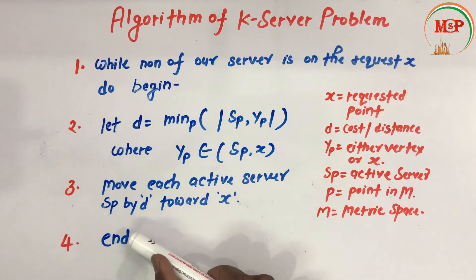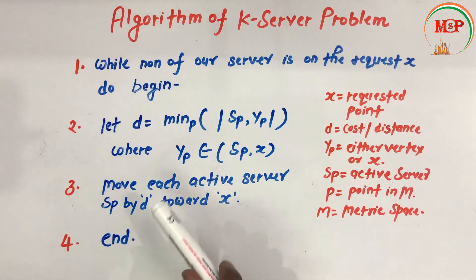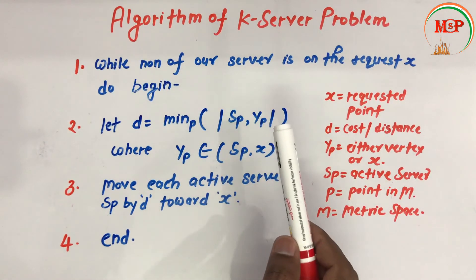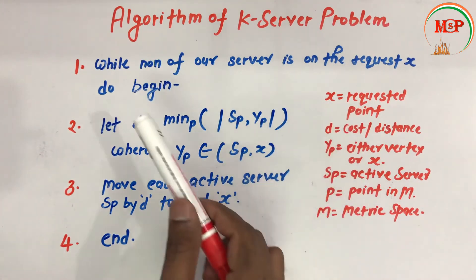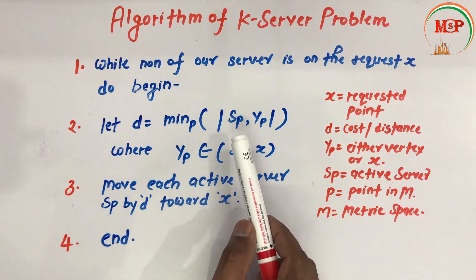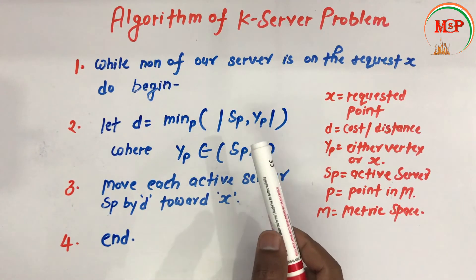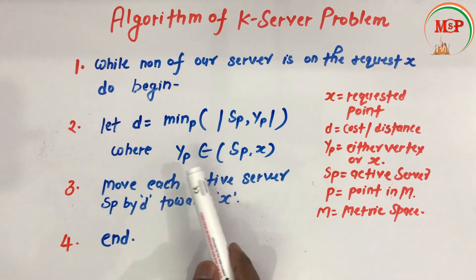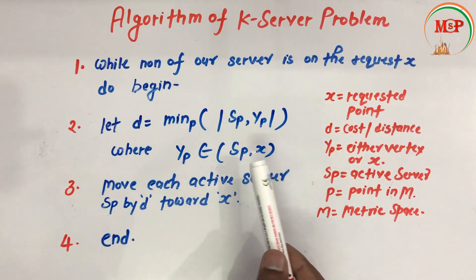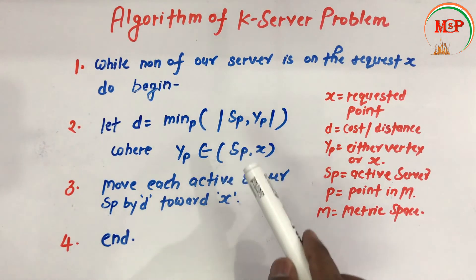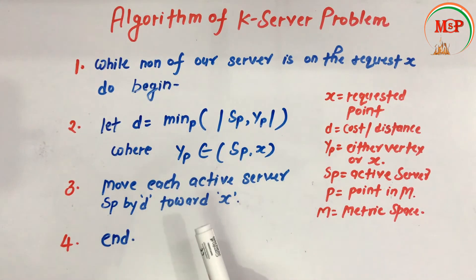After that, the algorithm ends. The overview of this algorithm is: we have several servers, and if none of them is working, we start the algorithm. We choose the minimum distance between the active server and a particular vertex or the requested point, store it in d, and yp belongs to the active server or the requested point. We keep moving the active server by this distance toward the requested point, and once it reaches the requested point, the algorithm ends.